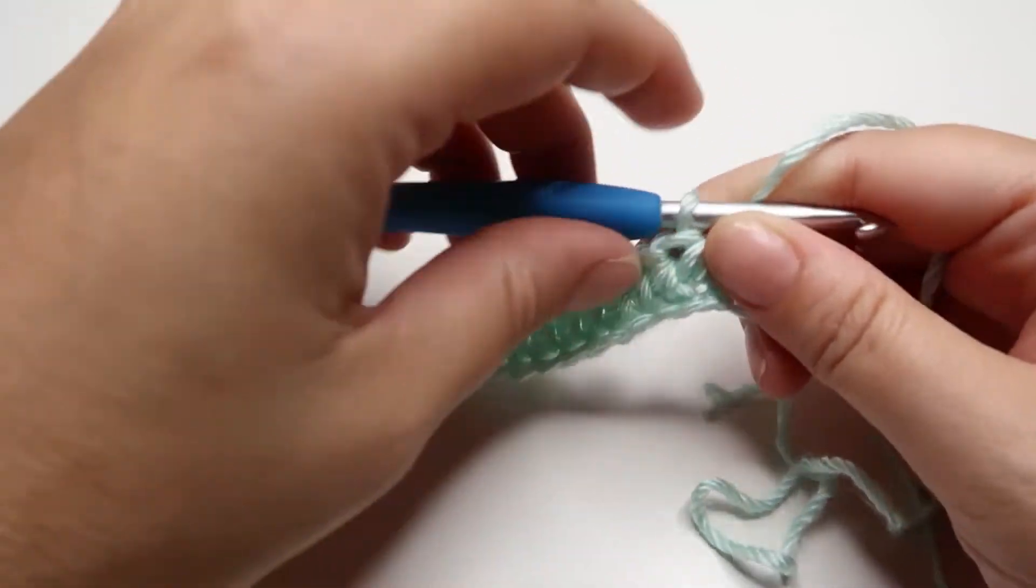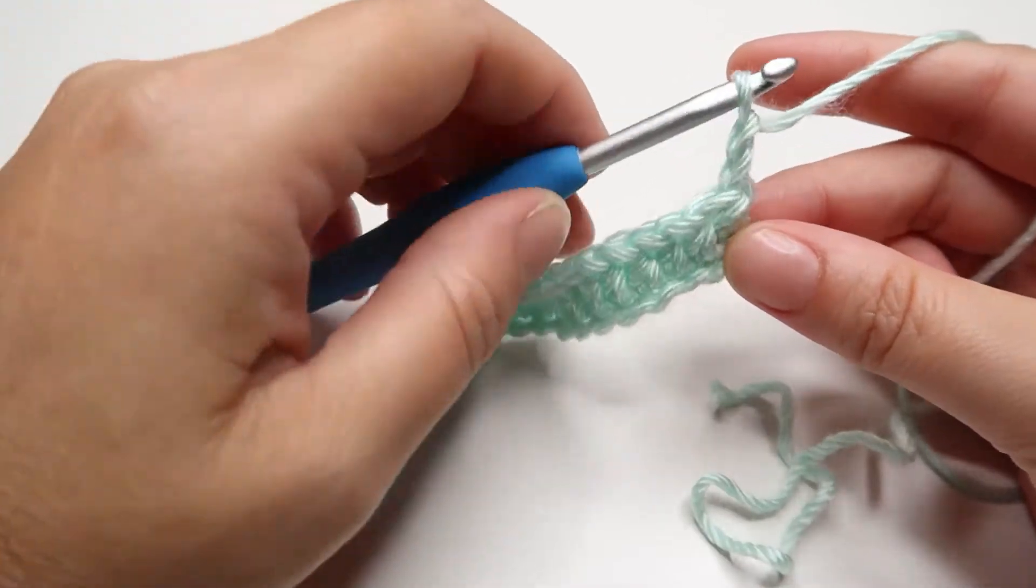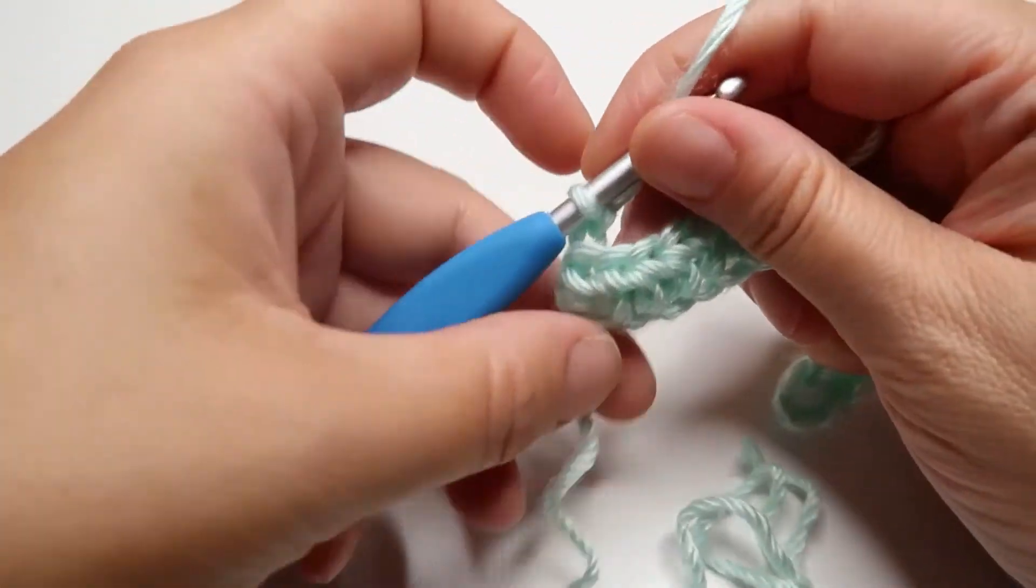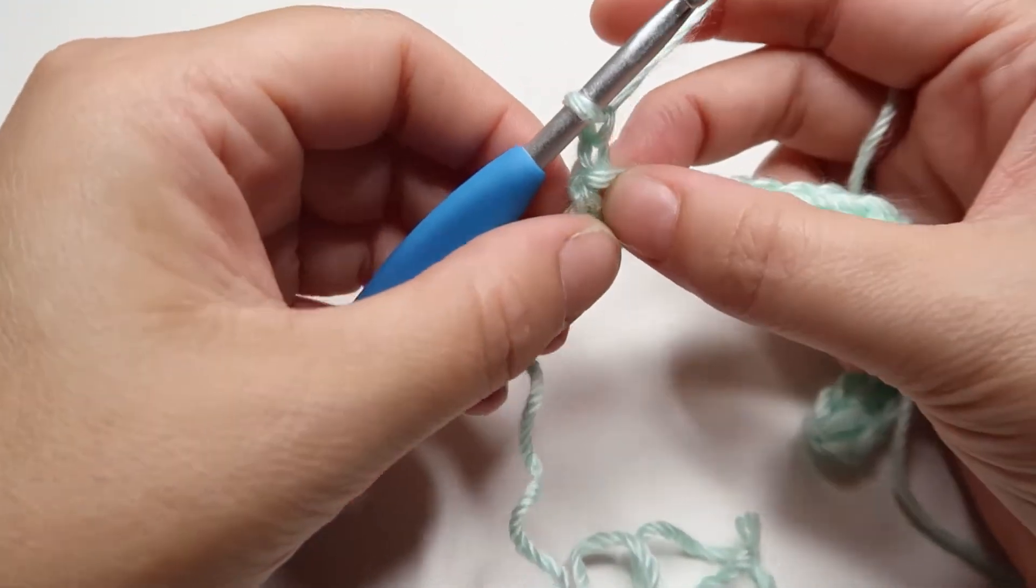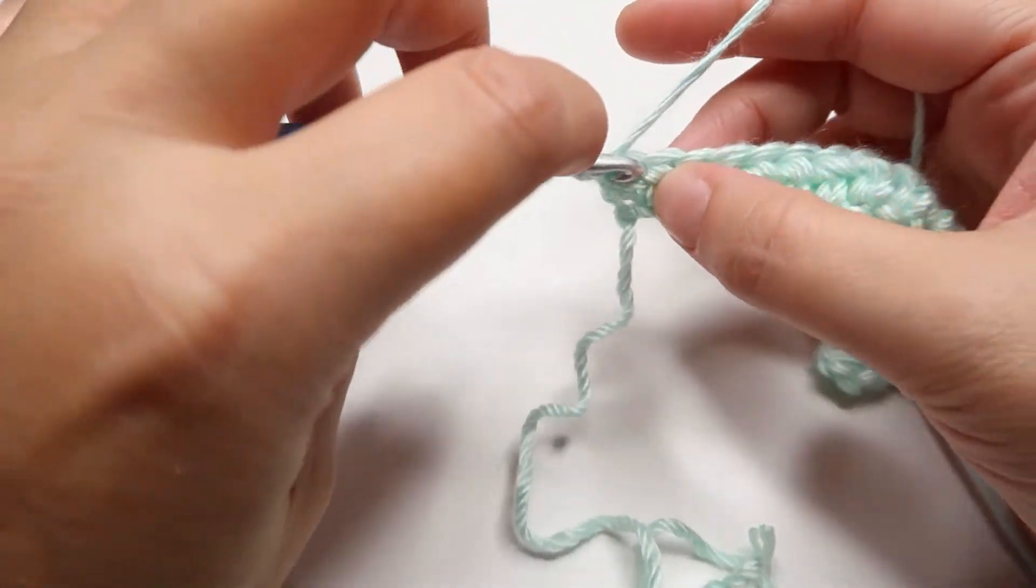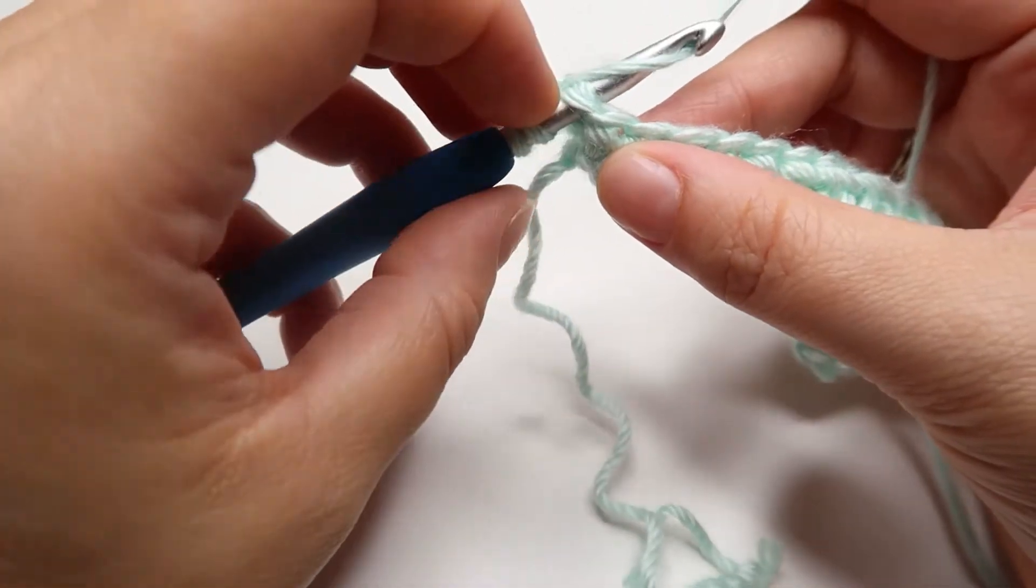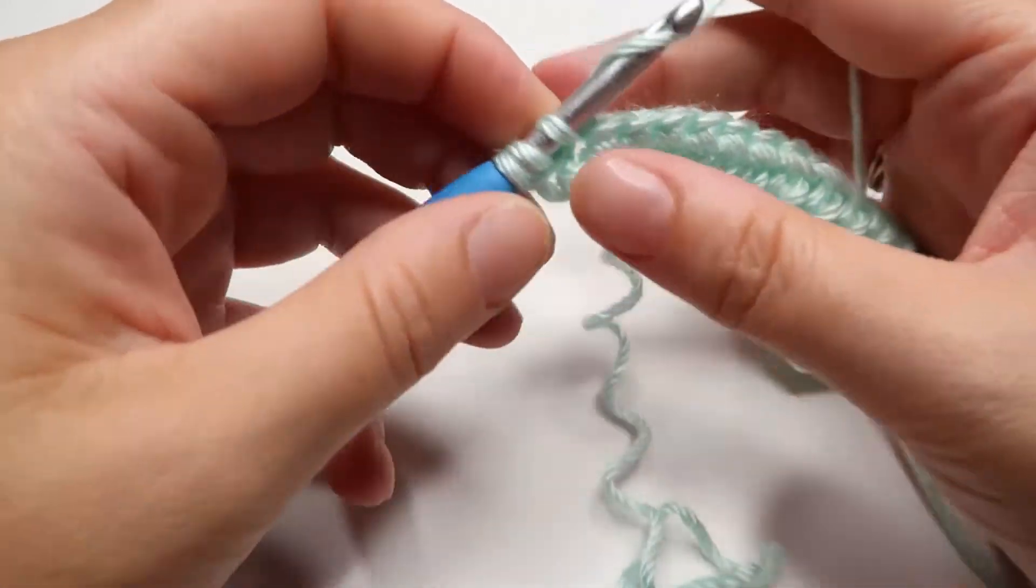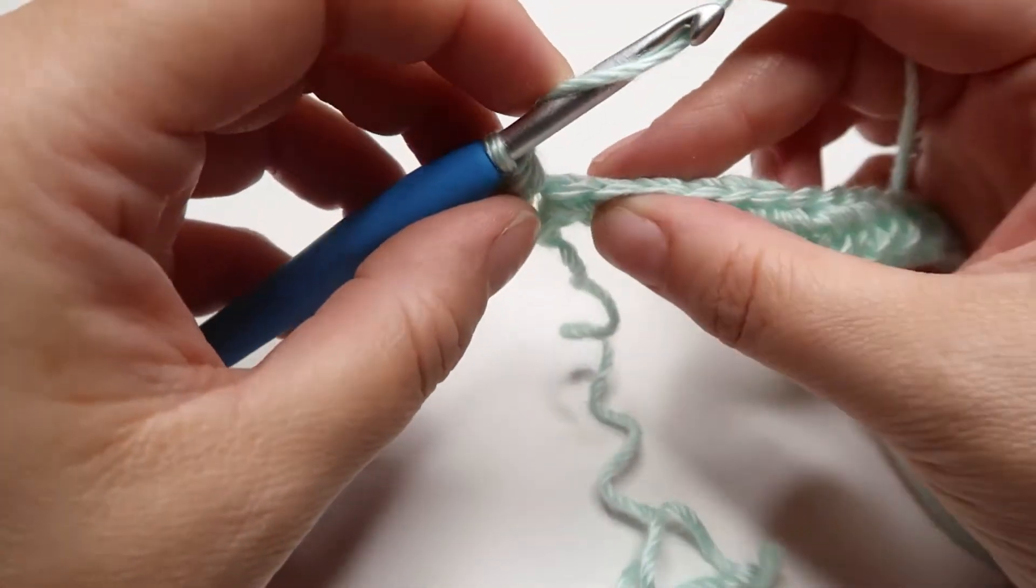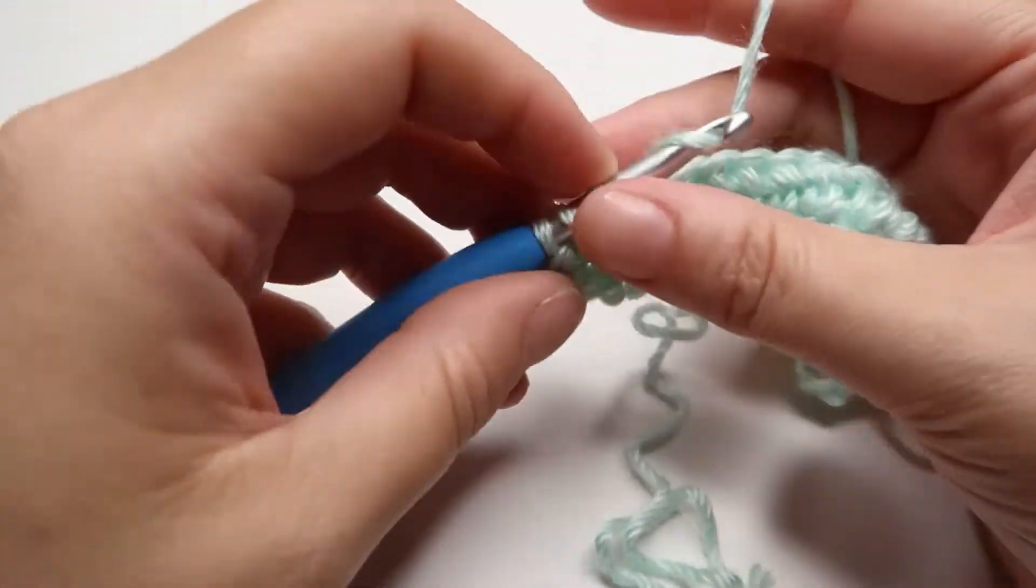Your first row finished. To make the second row, you're going to chain two to get it to the right height. Turn your work like if it's a page in a book, and you're going to make your first half double crochet in the first stitch because the chain does not count as a stitch. So yarn over, insert your hook under both loops, yarn over, pull it through, yarn over and go through all three loops. You just continue making half double crochets in each stitch across.